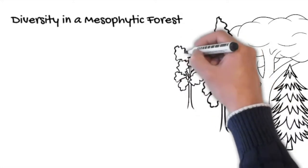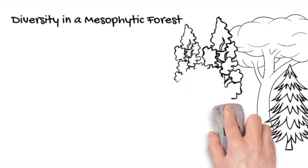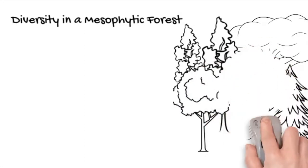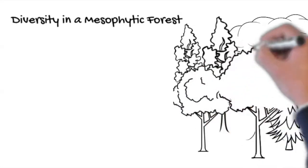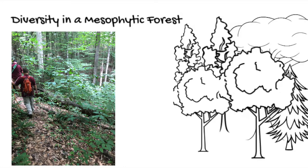Trees found there may include sugar maple, beech, tulip, poplar, oak, cucumber trees, and black walnuts. Others may include hemlock, white ash, and sweet gum. Some different types of oaks will be found there, such as white, red, and post oak, along with basswood and buckeye.